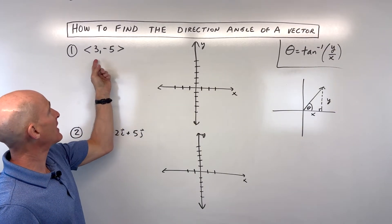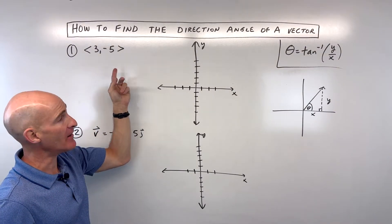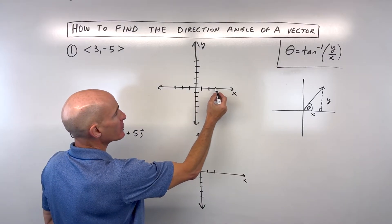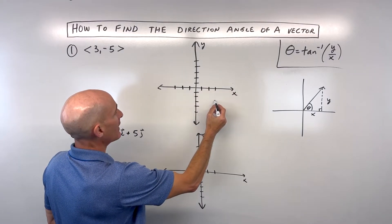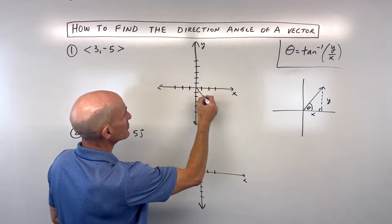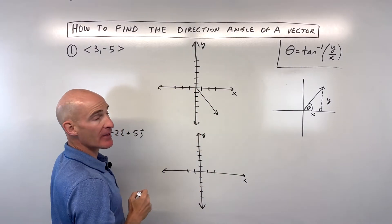So the first example, we've got this vector <3,-5>, which means we're going to go right 3 in the x direction, down 5 in the y direction. So our vector is going to look something like that.